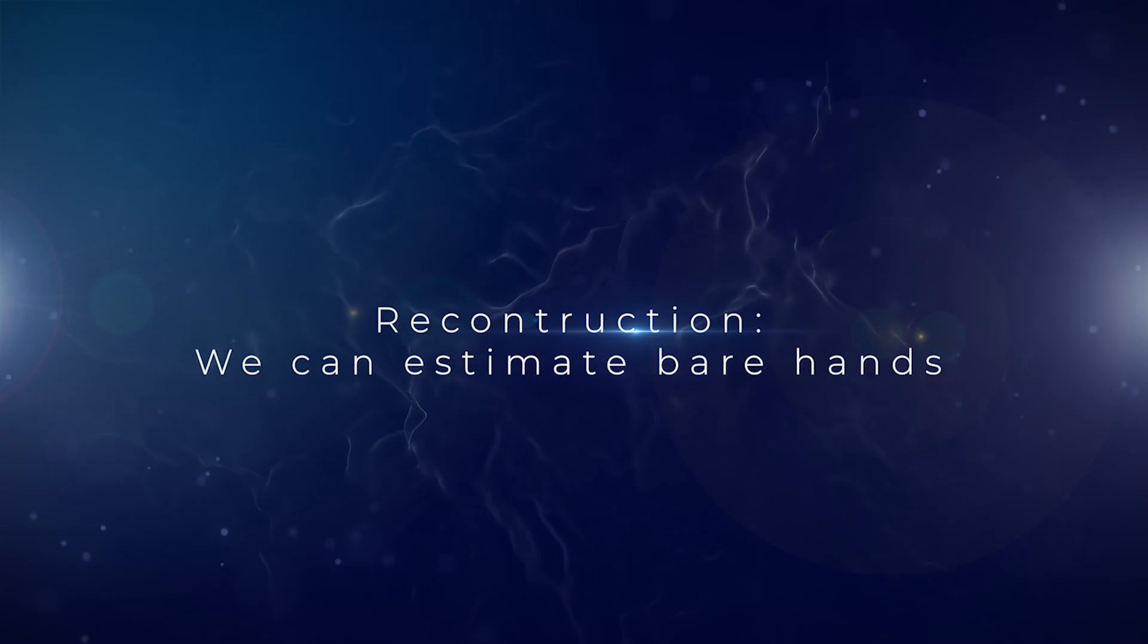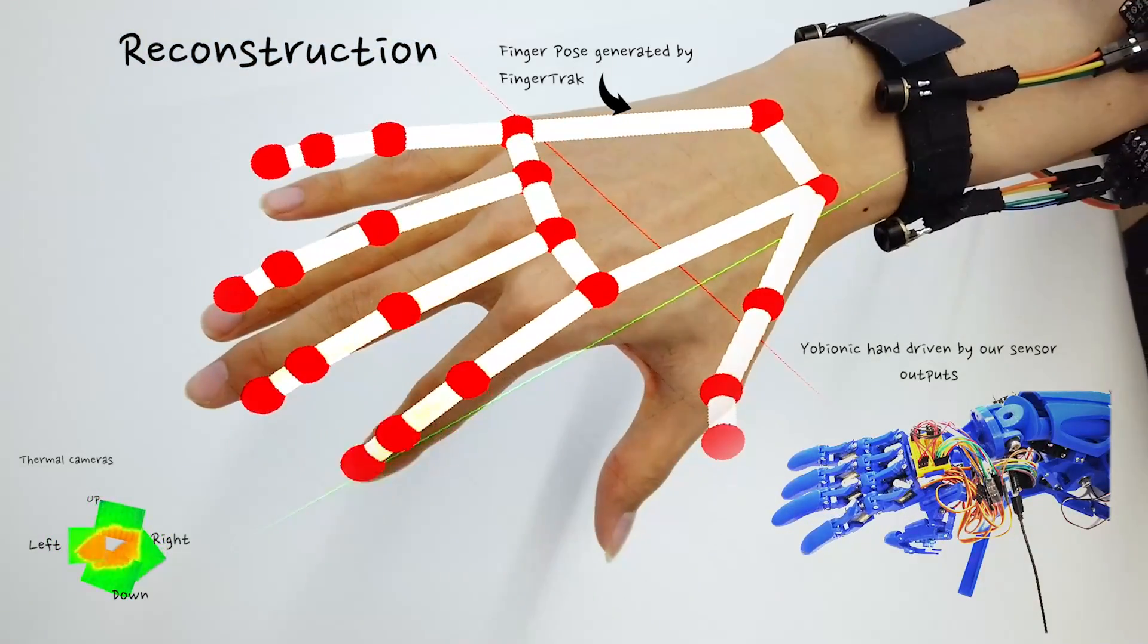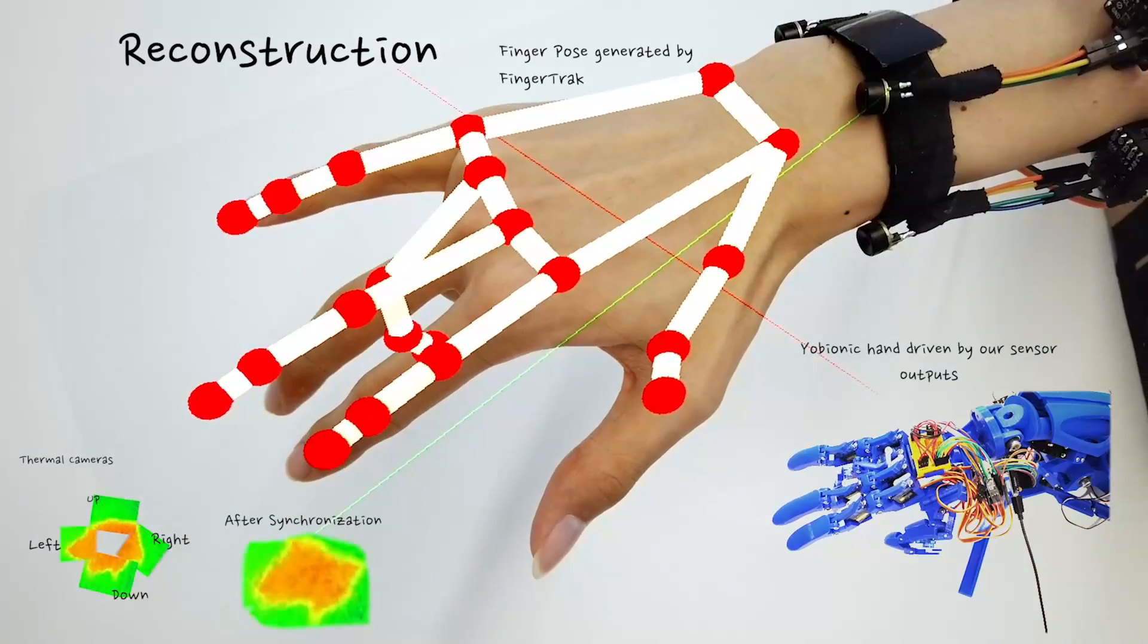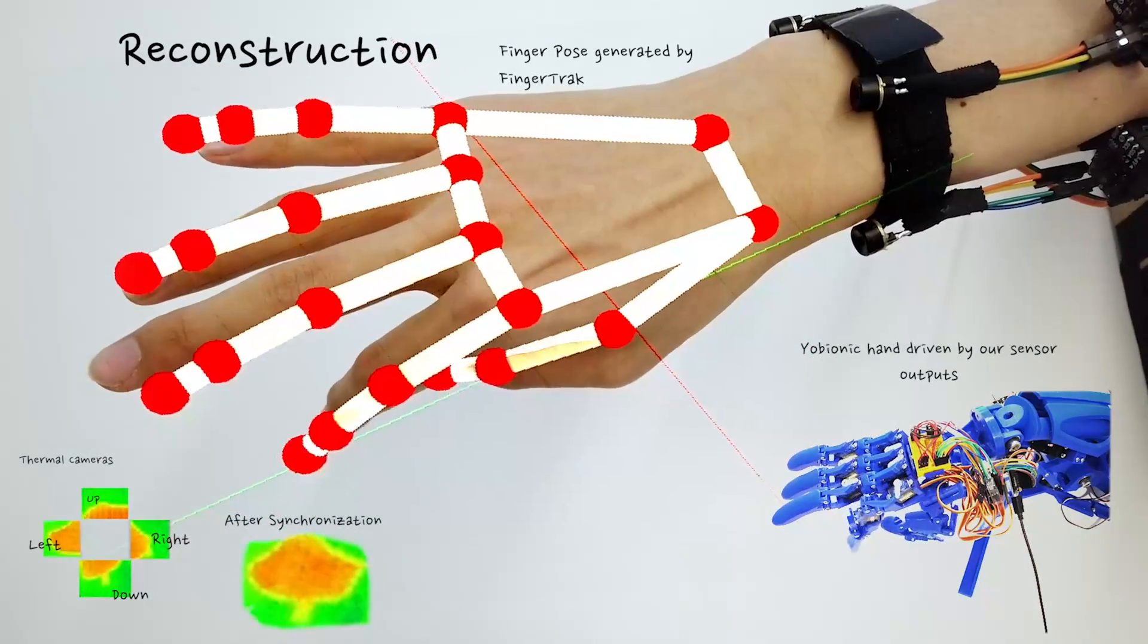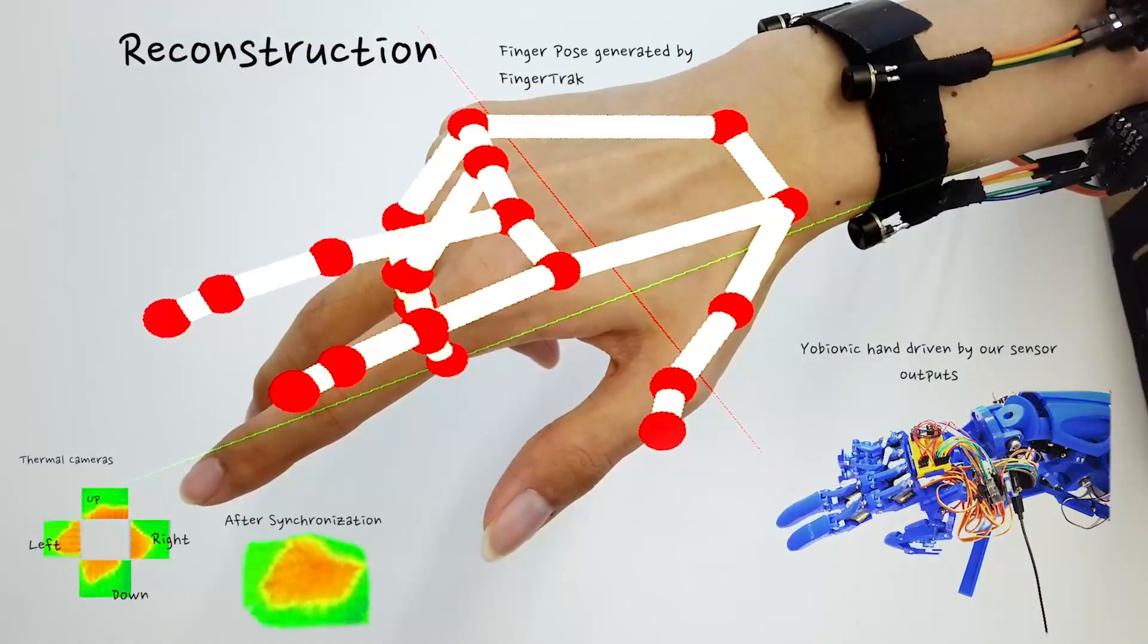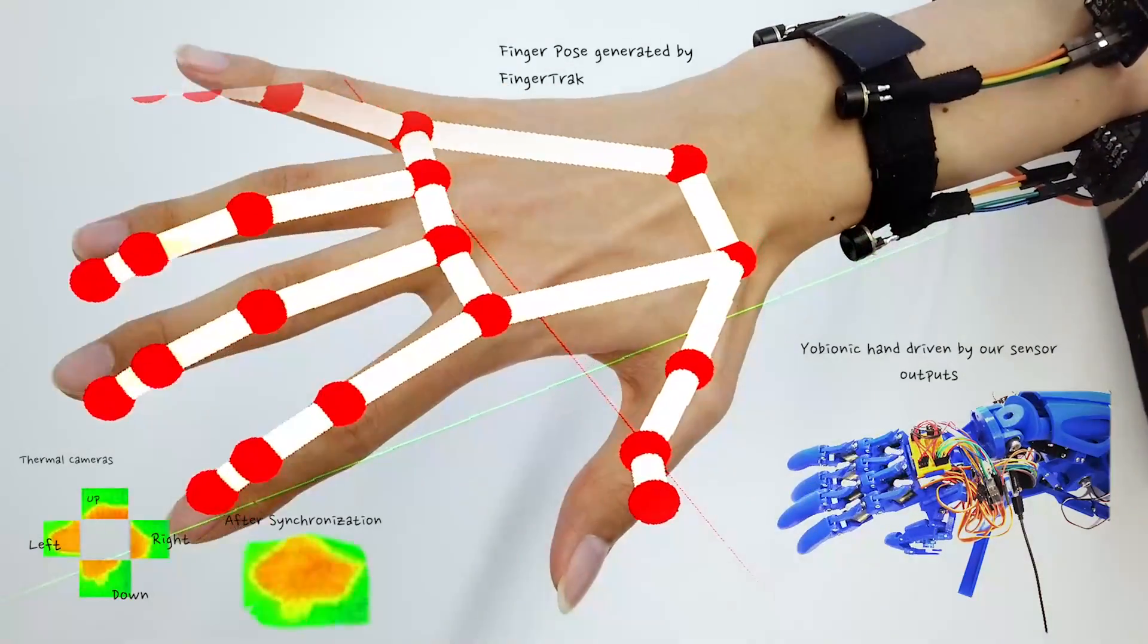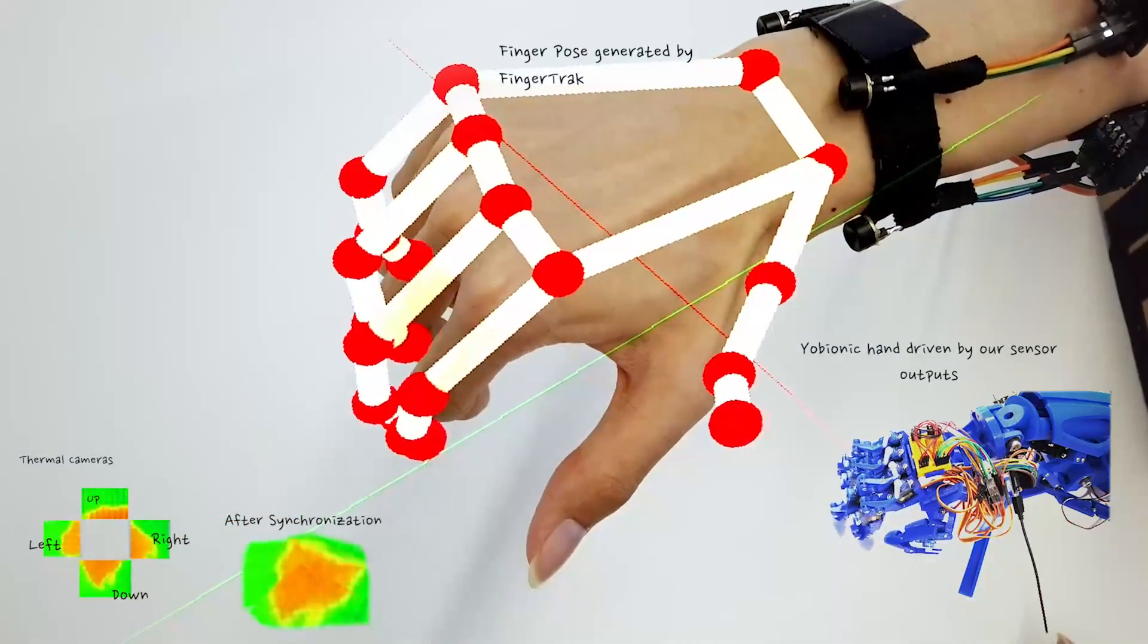Our system can estimate the pose of a bare hand. On the main screen, the hand with red joints is the estimated hand pose given by our model and superimposed on the real hand. In the bottom left corner are four stitched thermal camera images captured by the cameras on the wristband. The bottom right corner is a robotic hand controlled by the real hand. That is, the robotic hand simulates the estimated hand pose provided by our FingerTrack system.